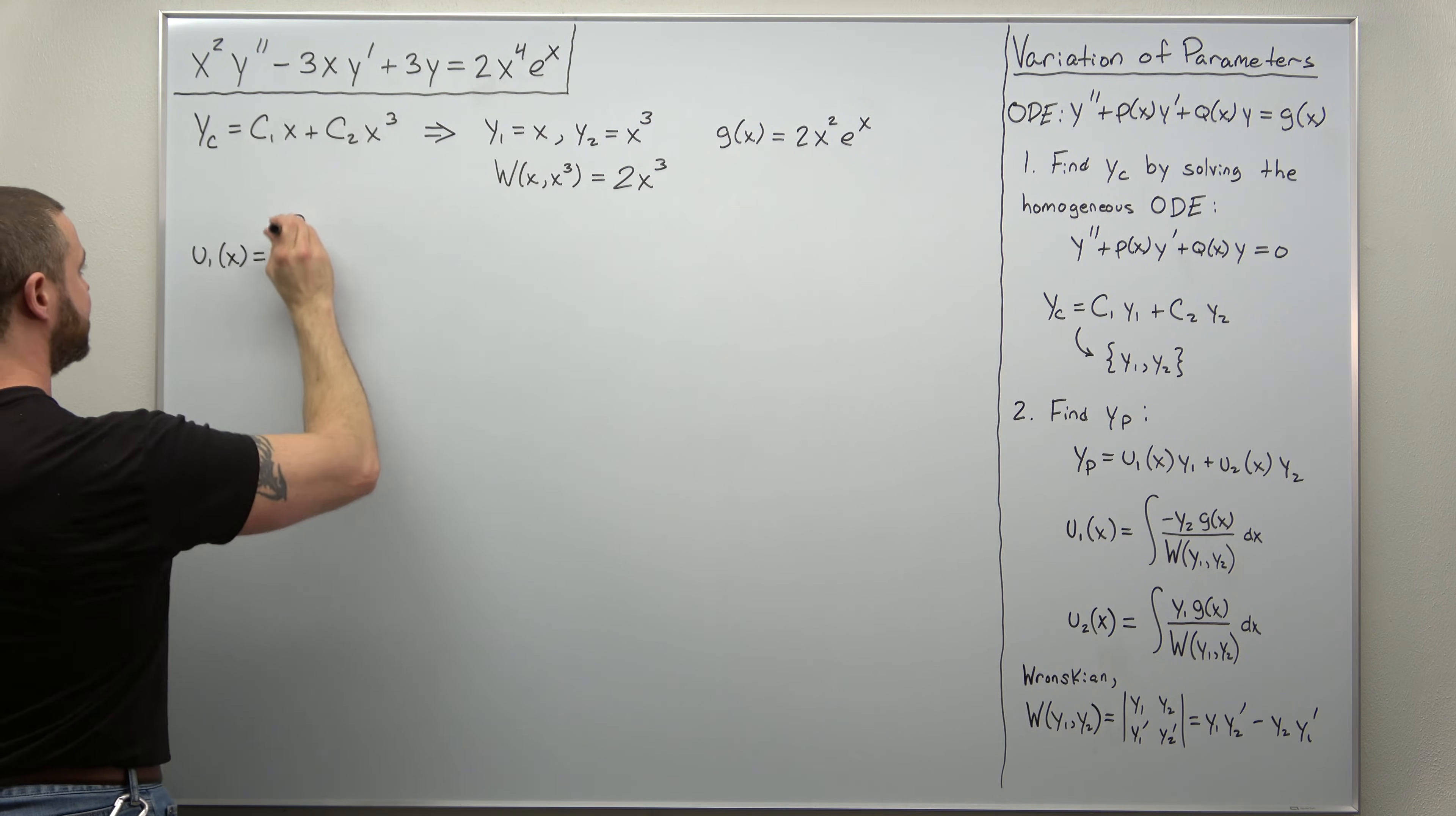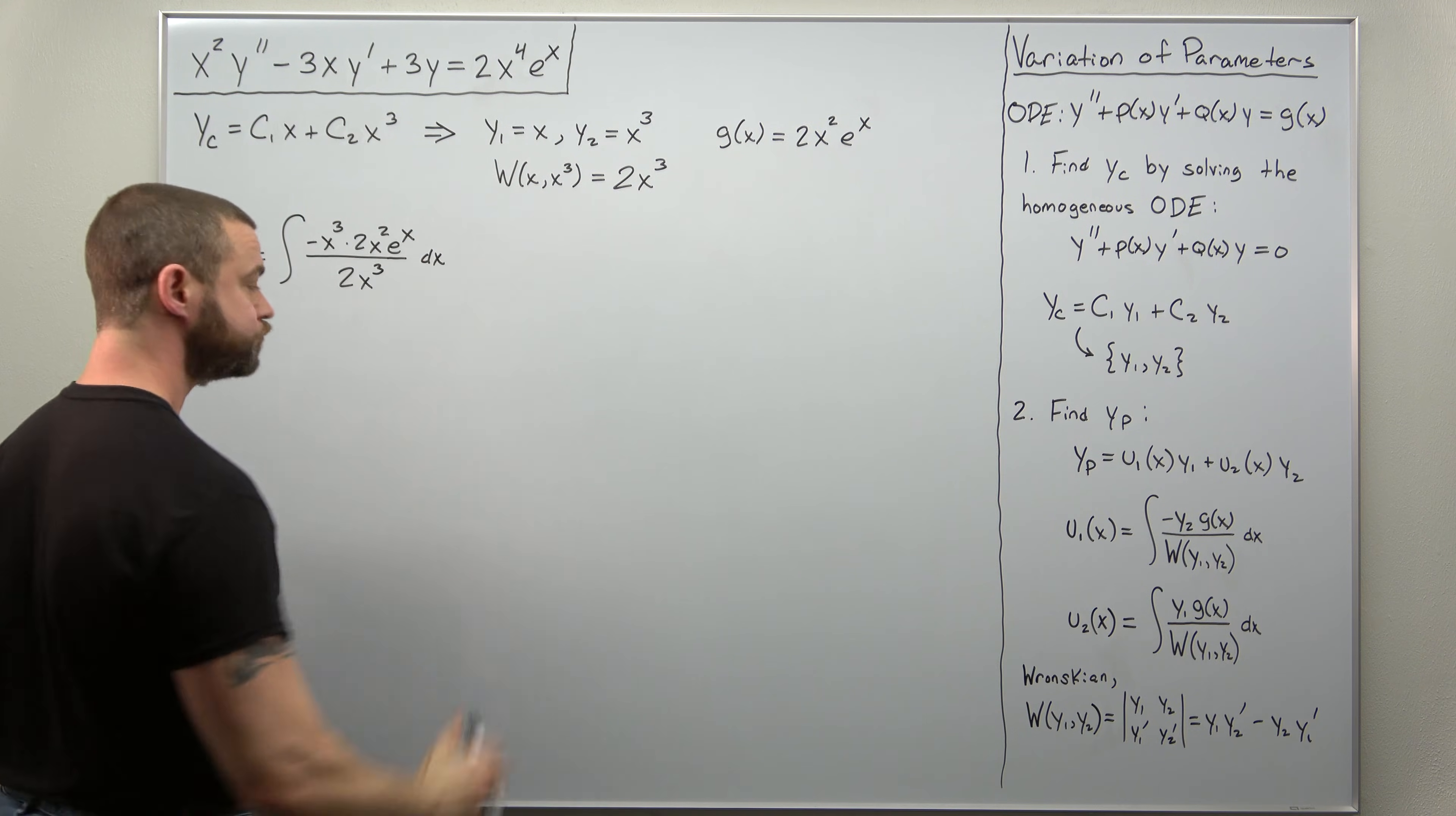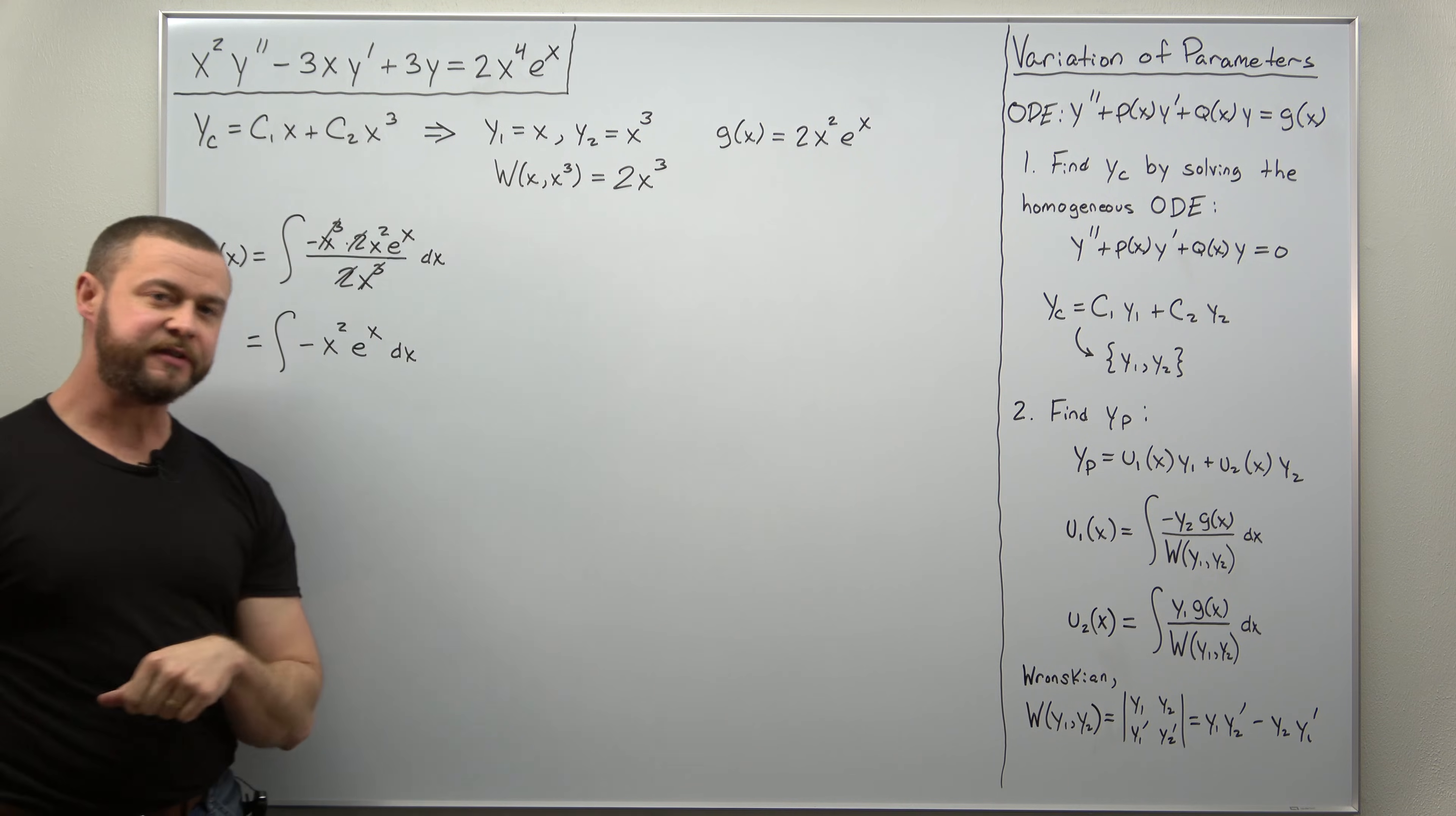So we'll just plug everything in. We get the integral of negative Y2, negative X cubed, times G of X, which is correctly 2X squared E to the X. Remember, we have to divide off the X squared to put it in the correct form to identify G of X. And we divide by our Wronskian 2X cubed. And it looks like we can simplify that considerably. It looks like I can cancel out a factor of X cubed and a factor of 2. So it looks like we're left with the integral of negative X squared E to the X. And that we can solve by integrating by parts twice. We're going to use the shortcut known as the tabular method.